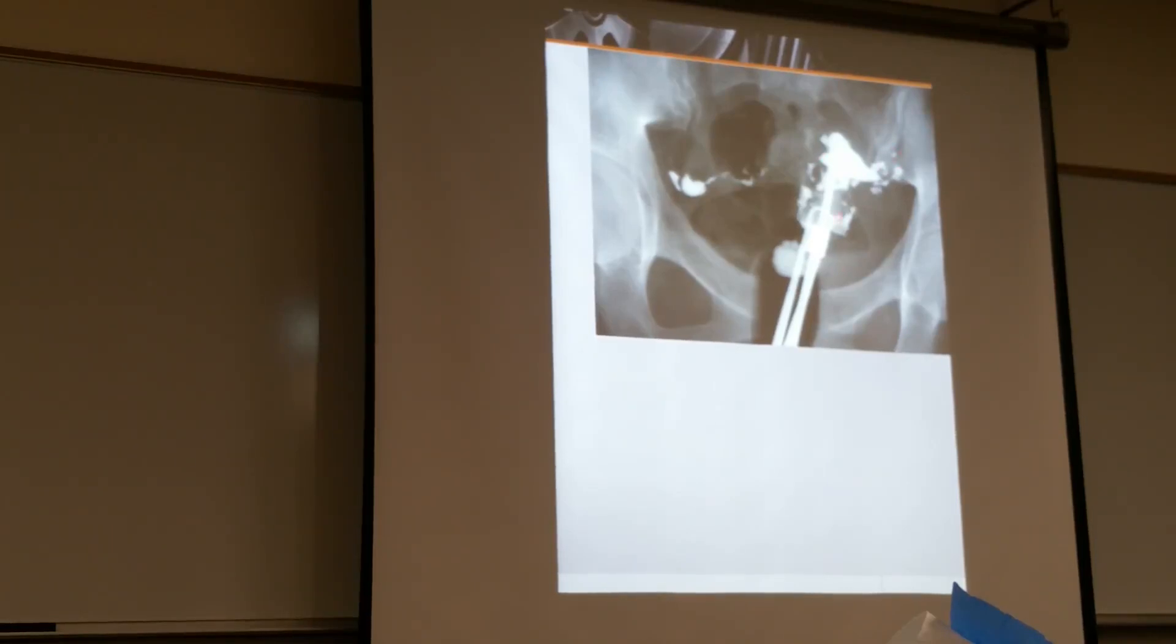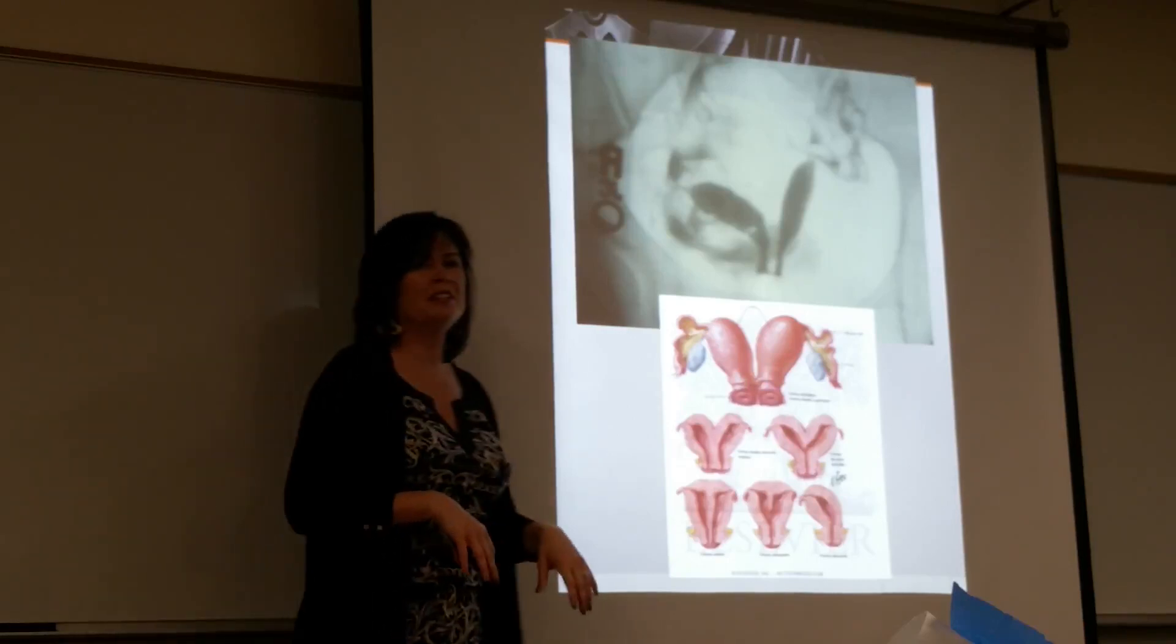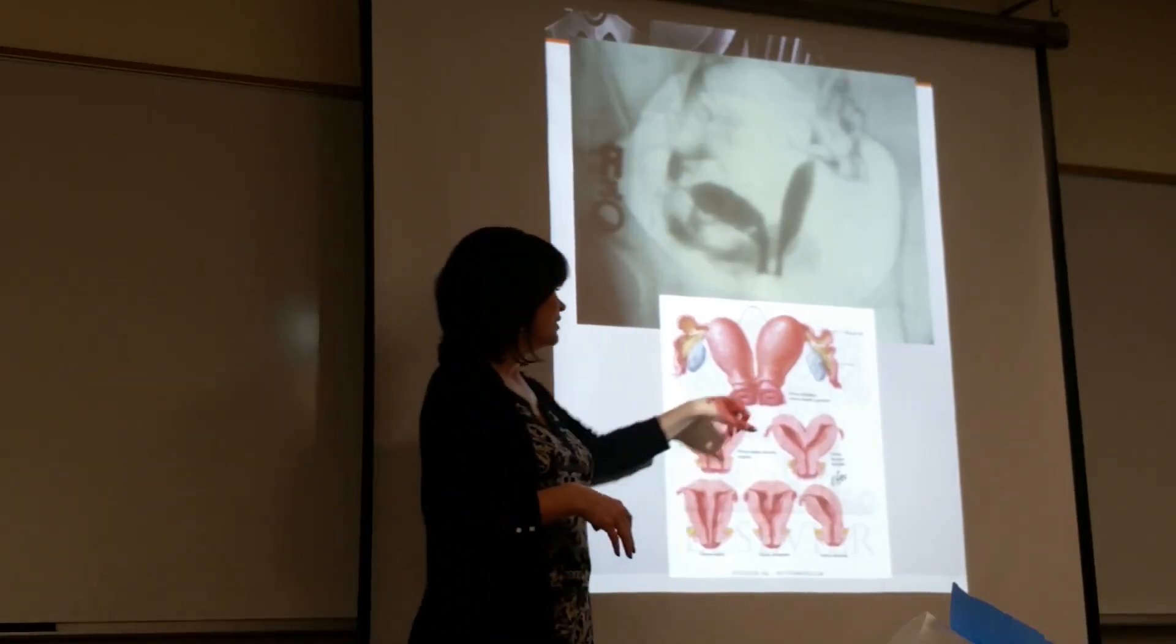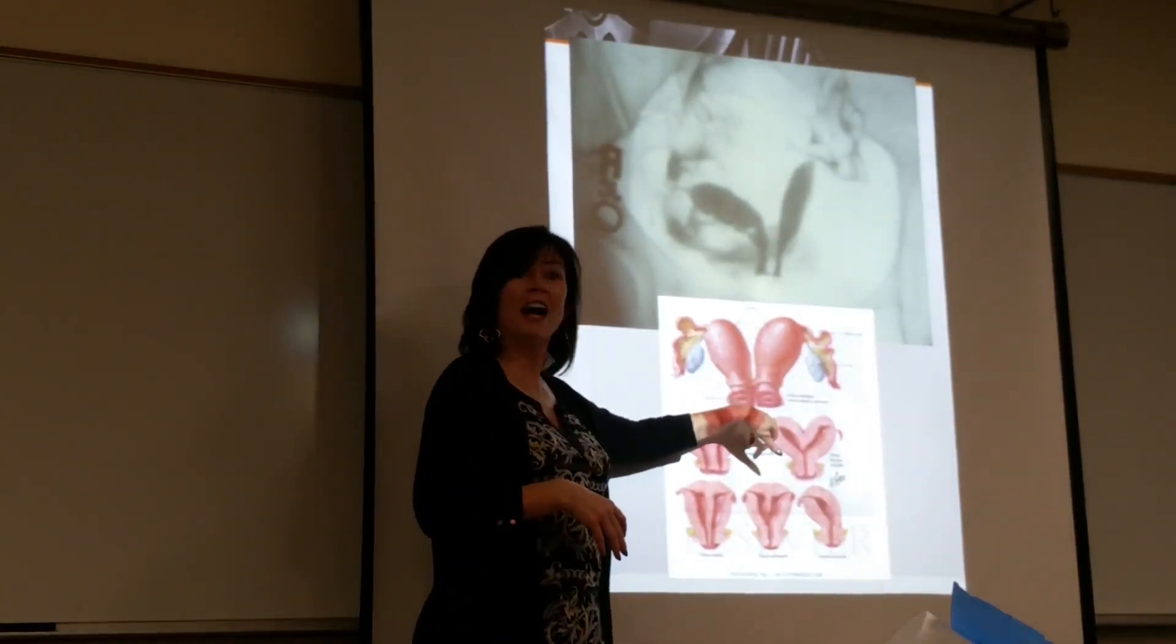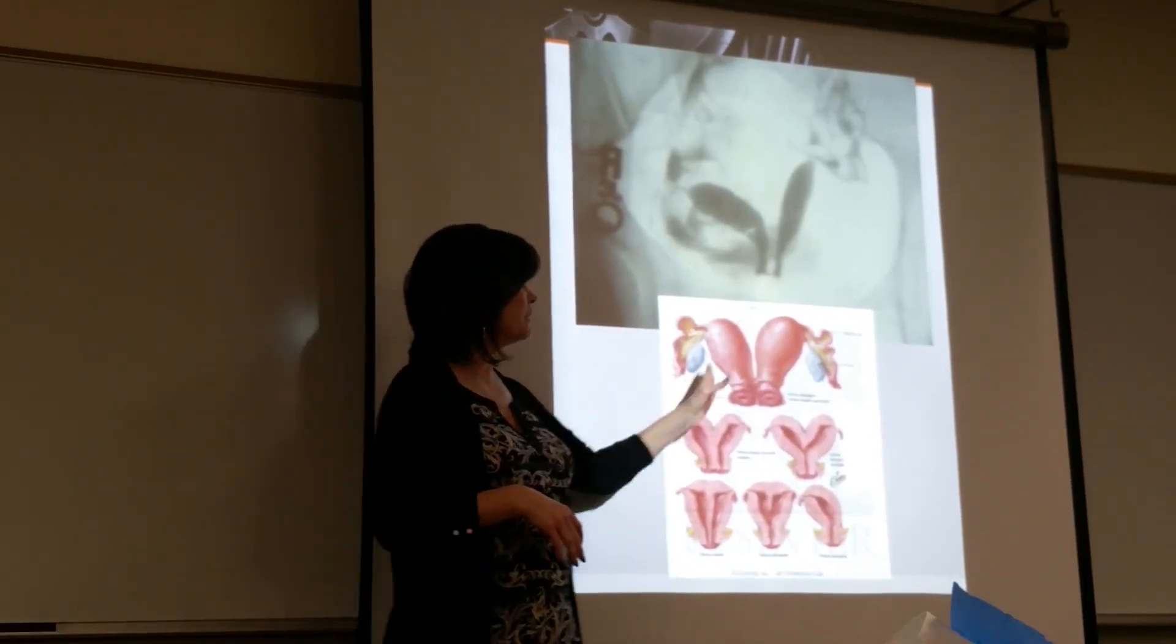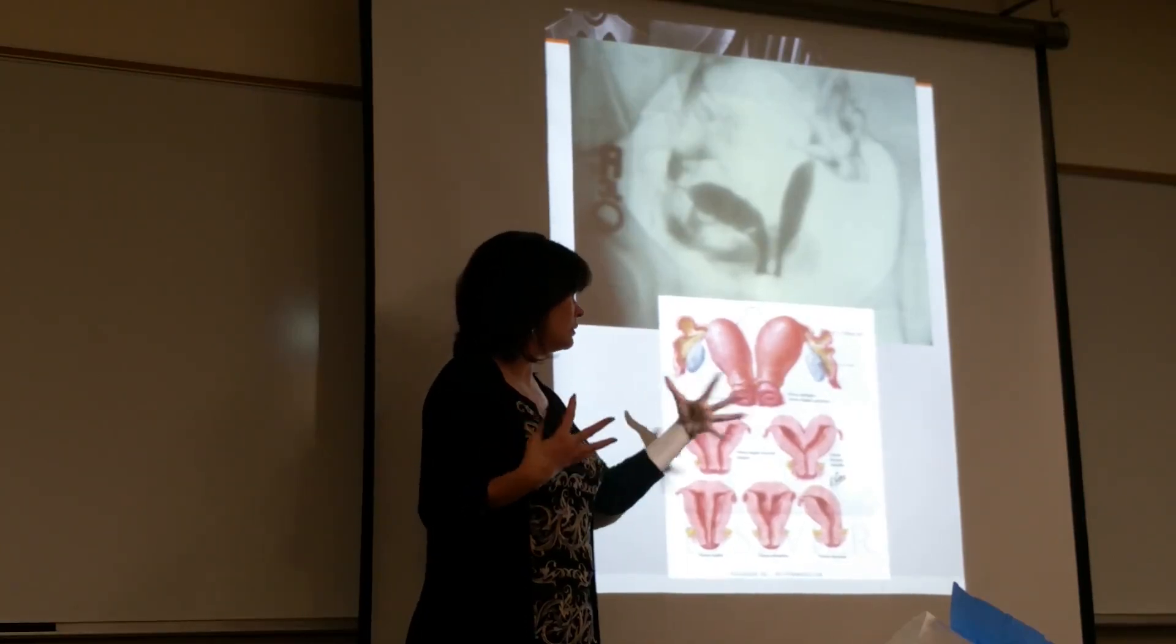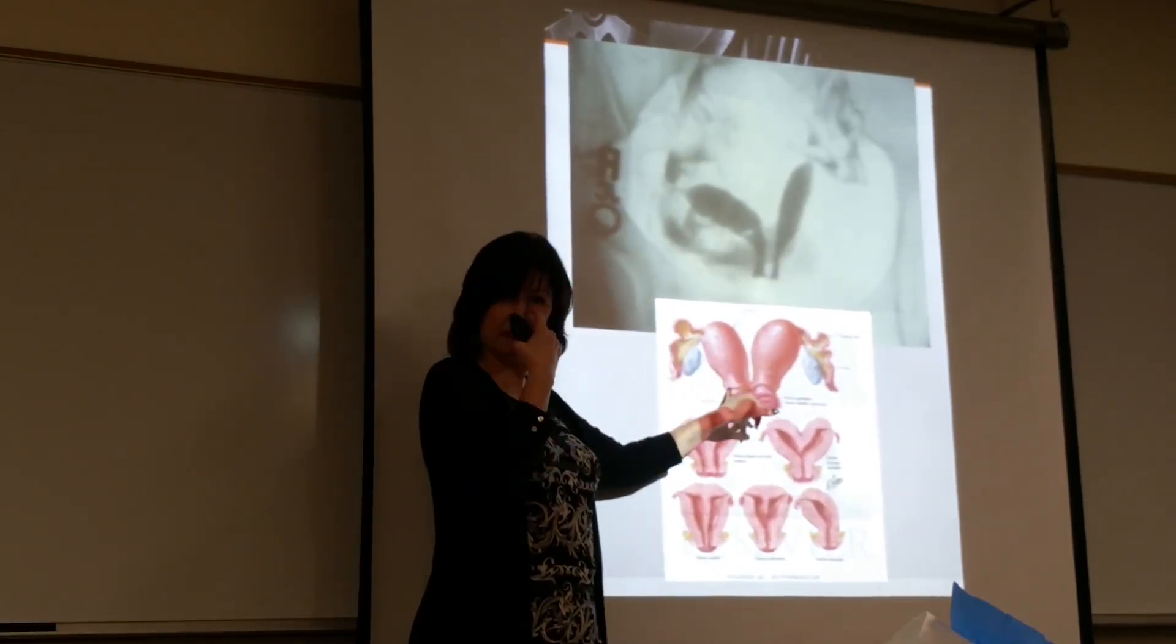Some congenital anomalies - look at this. I would feel very bad for these women. You can have two separate uteri with two cervixes. Typically you could have a fetus in here and then two months later get pregnant in that one.